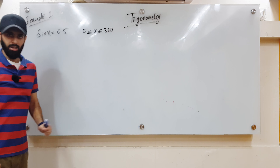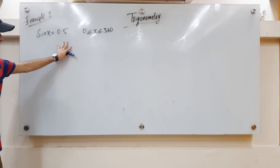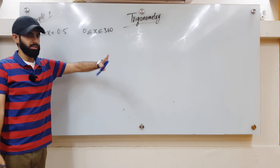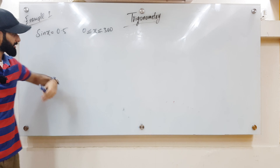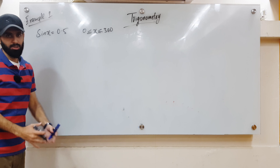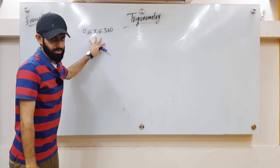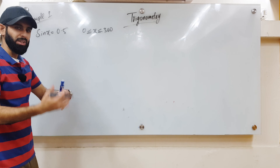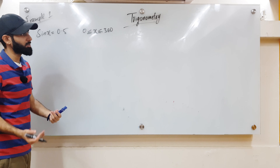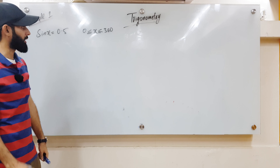Here's example one of today, where you're given sin x = 0.5 and x is from 0 to 360. Normally the question is going to ask you to find all the values of x in this range. Since the question asks us to find all the values, that means we're likely to end up with more than one value.